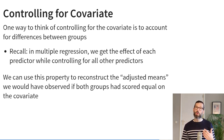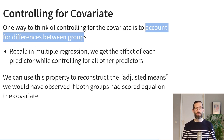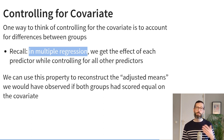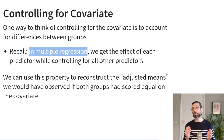One term you'll often see in the context of ANCOVA analyses is adjusted means. Adjusted means tell you what the mean of each group would have been had they scored the same on the covariate. One way to think about controlling for a covariate is that you are accounting for pre-existing differences between the groups. In multiple regression we obtain the effect of each predictor accounting for all others, and we can use that property to reconstruct the adjusted means.